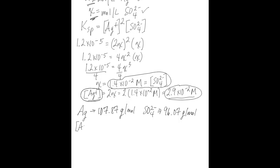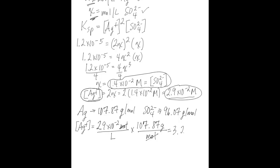For silver, multiply 2.9 times 10 to the negative 2 moles per liter by the molar mass of silver, 107.87 grams per mole. The moles cancel, and the result is 3.2 grams per liter.